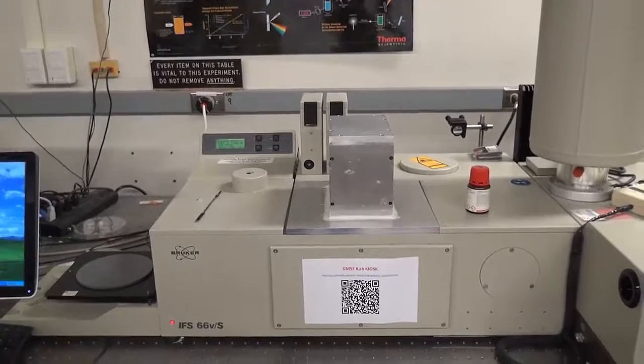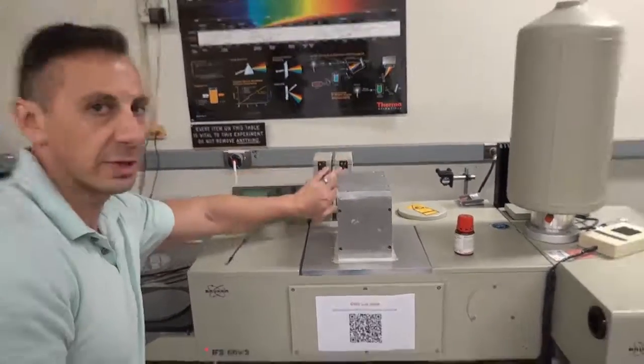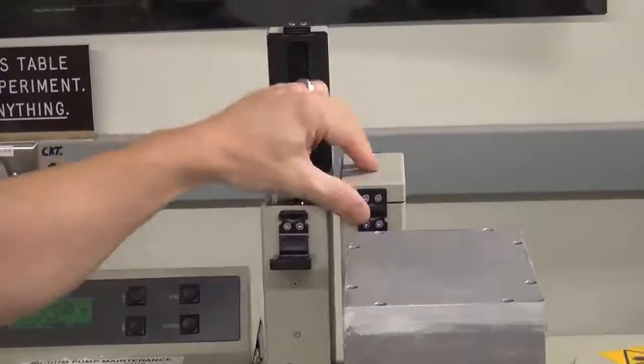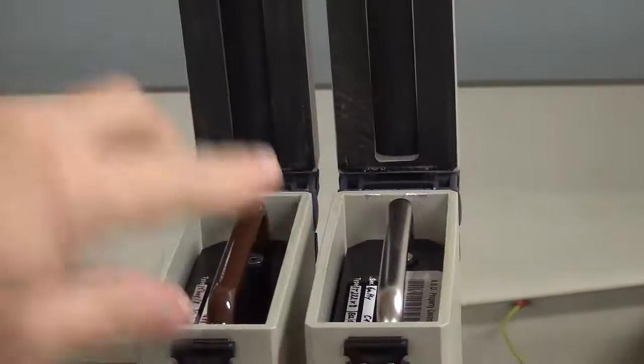There are two ways to check which beam splitter is installed. The first is to check the storage boxes to see which one is missing. As you can see in this example, the brown and the silver beam splitters are in the storage boxes, so the red one is installed.